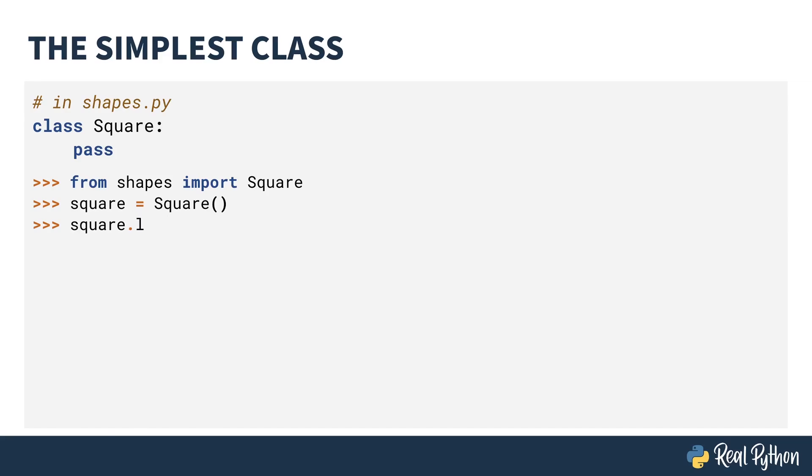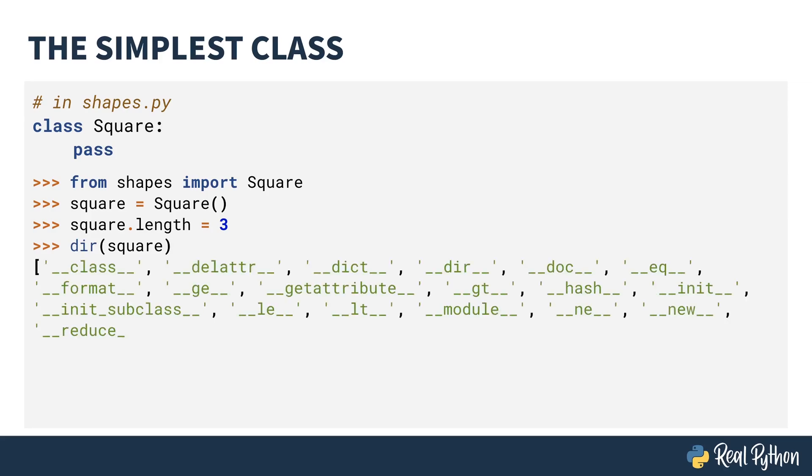I can now add attributes to that square, maybe a length of three, and I can examine that square by using the built-in function called dir. There's a lot of content here. Don't worry about it too much. There's just two things I want to point out. On the bottom right-hand side, you'll notice length. When I added the length attribute to square, dir shows that it's there.